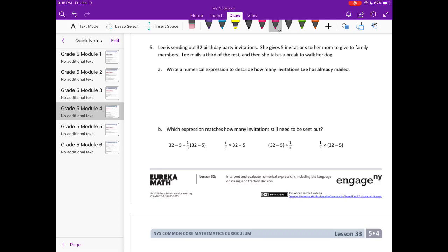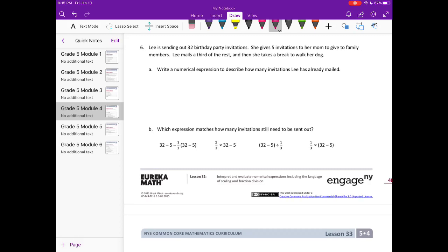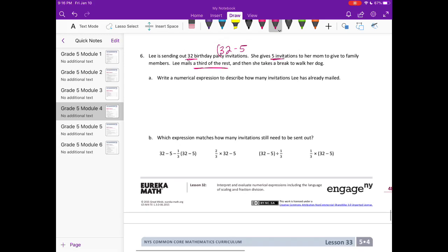Number 6, Lee is sending out 32 birthday party invitations. She gives 5 invitations to her mom to give to family members. Lee mails a third of the rest. And then she takes a break to walk her dog. Write a numerical expression to describe how many invitations Lee has already mailed. So what we have is she's sending out 32. She gives 5 to her mom. So to me that would be 32 minus 5. So we're getting rid of 5 that she gave to her mom. And she mails a third of the rest. So we would do 32 minus 5. And then we're going to take one third of the rest. So of, I'm going to multiply. So a numerical expression would be 32 minus 5 times one third. Another way you could write it would be 32 minus 5 divided by 3. Because multiplying by a third and dividing by 3 are the same thing.